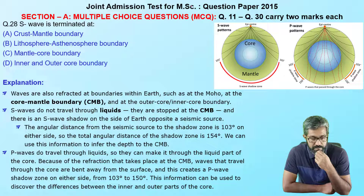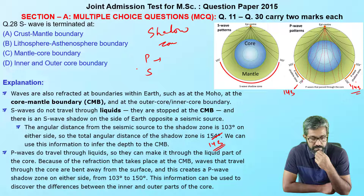This question asks where the S-wave is terminated. To understand this: seismic waves include body waves (P-waves and S-waves) and surface waves. As waves travel through the Earth, beyond a certain region we can no longer receive P or S waves. This region extends to about 143 degrees. This zone of non-reception is called the shadow zone, and it applies to both P and S waves.